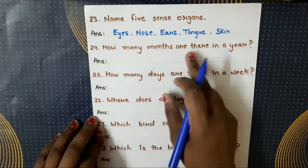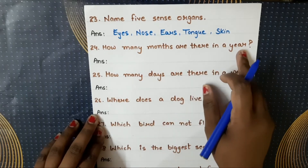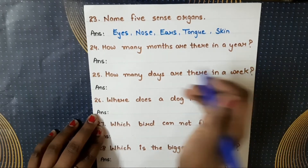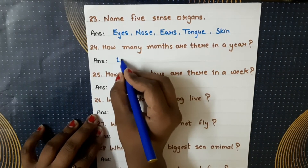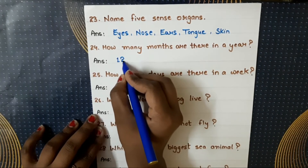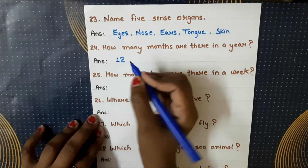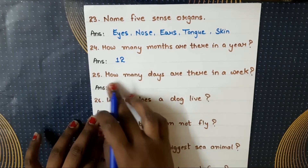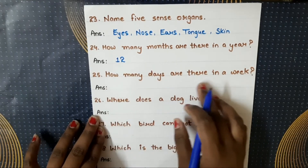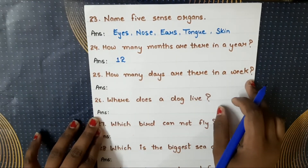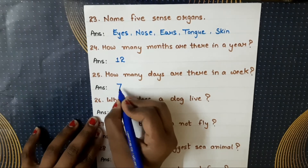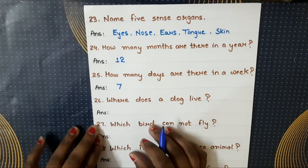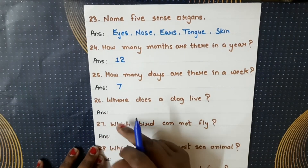Next question: how many months are there in a year? Year mein kitne months hote hain? There are twelve months in a year. How many days are there in a week? There are seven days in a week.